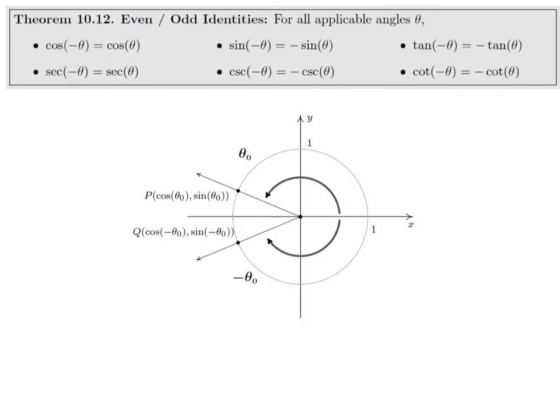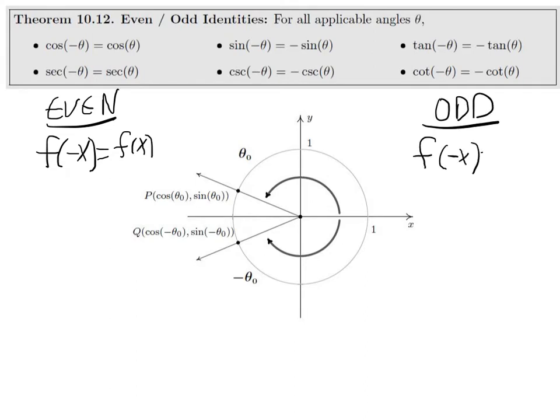The first theorem in this section is about even and odd functions, the even and odd identities. As a reminder, even is when f(-x) = f(x), and odd is when f(-x) = -f(x). Cosine is an even function, as is its reciprocal secant. All the other four of the six trigonometric functions are odd.